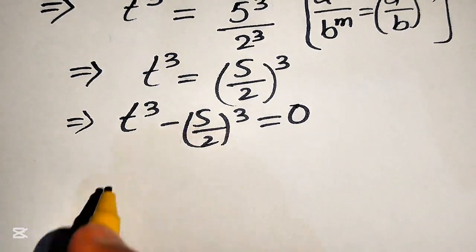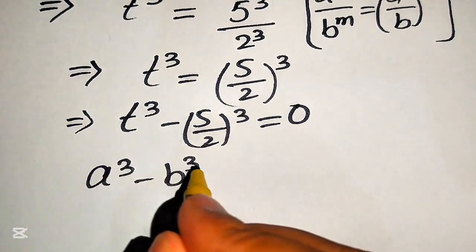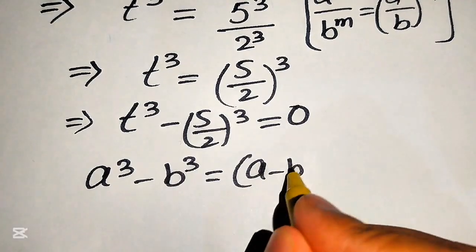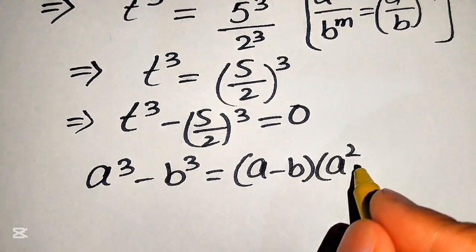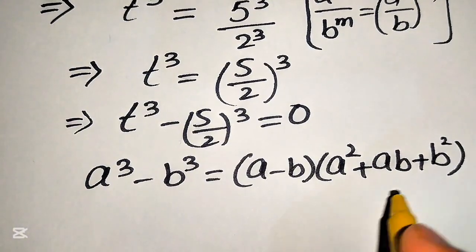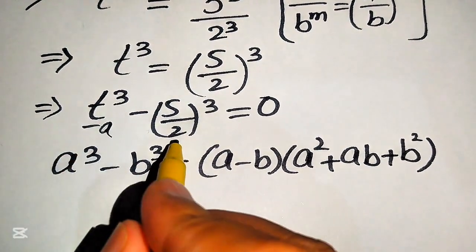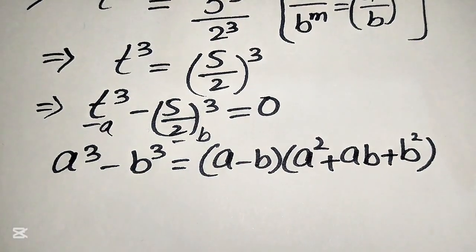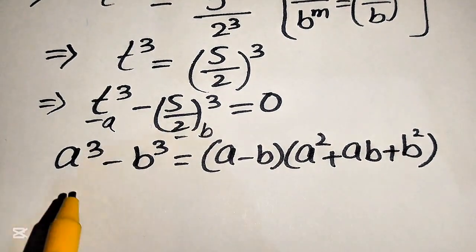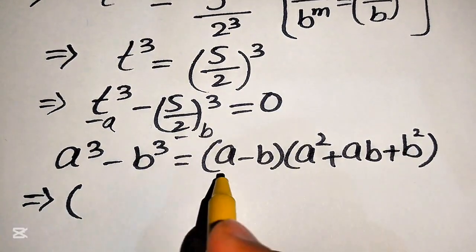Here we apply the cubic factoring formula. You know that a cubed minus b cubed equals (a minus b) times (a squared plus ab plus b squared). The base of the first term is our a and the base of the second term is our b.